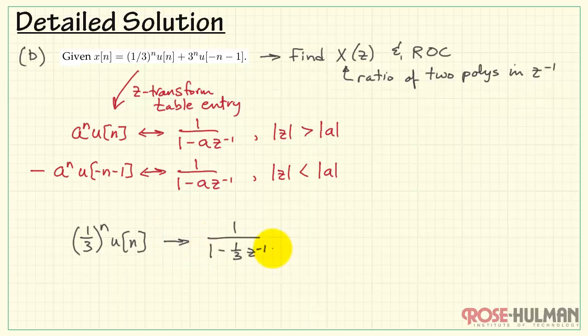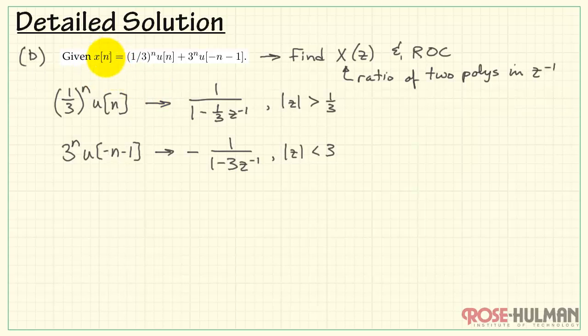Now this form applies to the first expression, 1/3 to the n times u of n. In terms of its z-transform looks like this. Now to properly use what we find from the z-transform table, we will need to insert a negative sign. And then we can go ahead and use that form as printed. There's the region of convergence for each of these terms in the z-transform domain. Now x of z will be the sum of these two expressions. You can initially write down plus, but then the negative sign was part of the definition of the z-transform. That's why I'm going to be subtracting the second piece here.